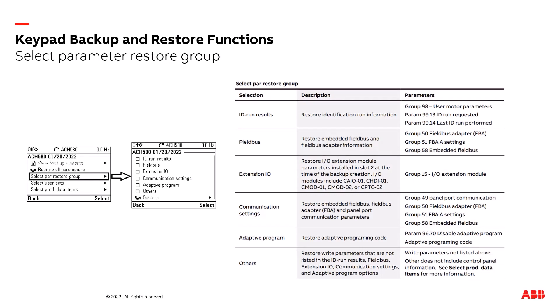Selecting parameter and restore groups: when you select parameter and restore groups, we have multiple options — you can select one or all options. The ID runs results restores the identification run information. Fieldbus information can be stored. Extension I/O information is available if you have extensions on the drive. Communication settings and adaptive programming are also options. Others will be anything not listed above on this chart.